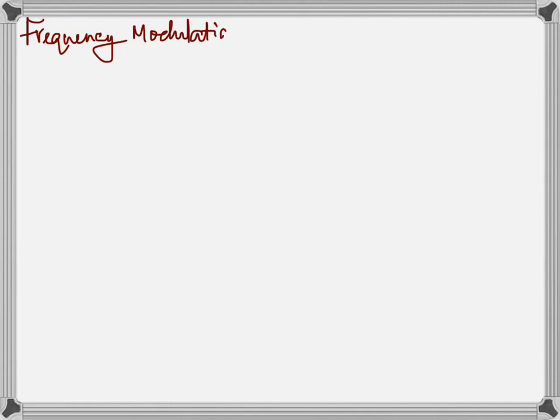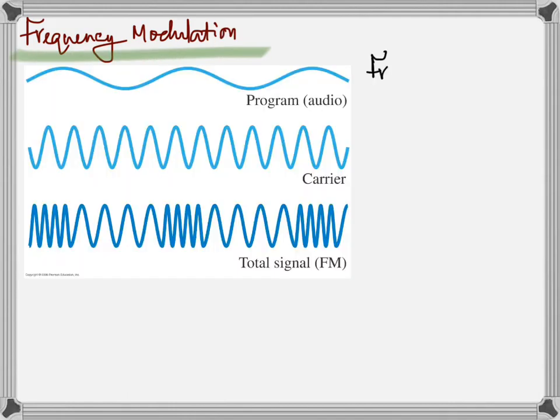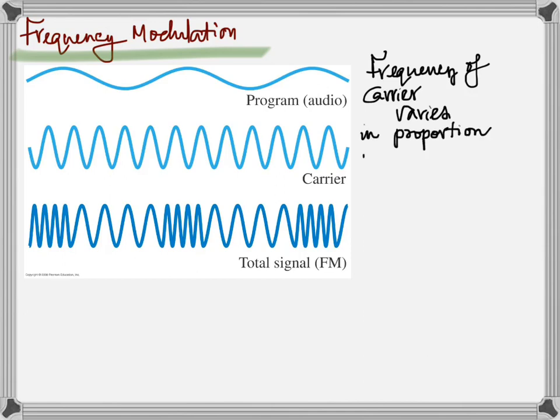In frequency modulation (FM): you change the frequency of the carrier according to the amplitude of the signal. The carrier, which originally had constant frequency, now bunches up where the signal is at positive maximum and spreads apart where the signal is at negative maximum. Where the signal is zero, the carrier frequency is unchanged. There is also phase modulation, where the phase of the carrier changes according to the amplitude of the signal.